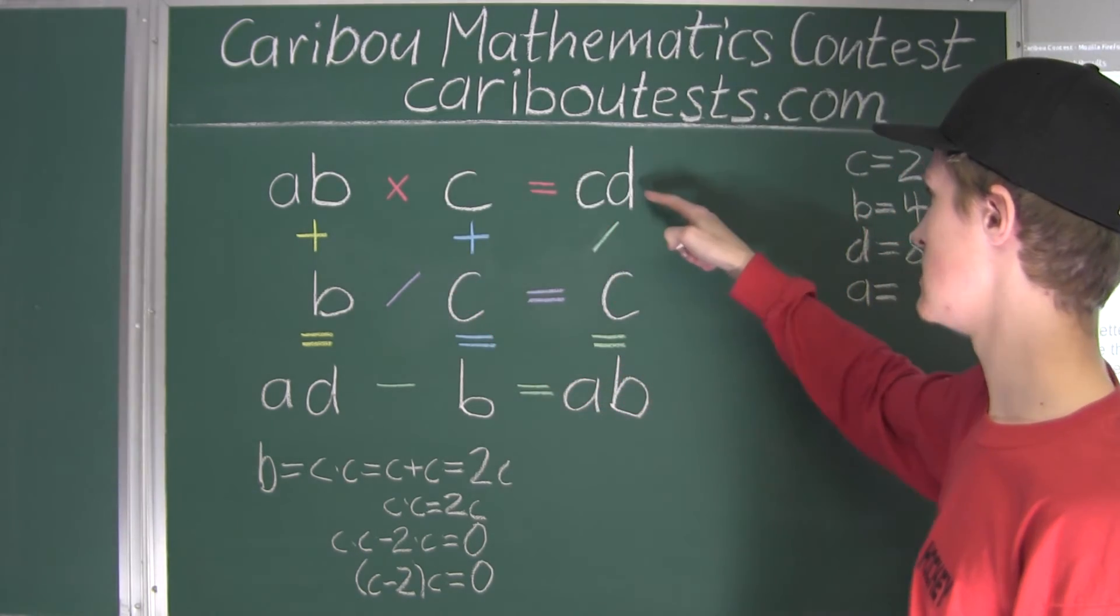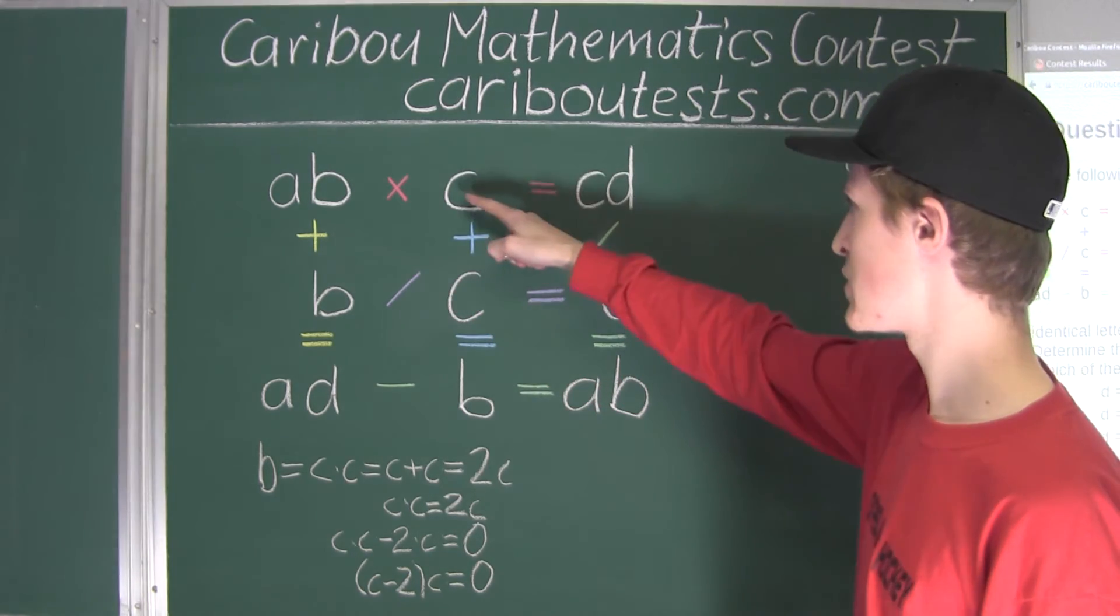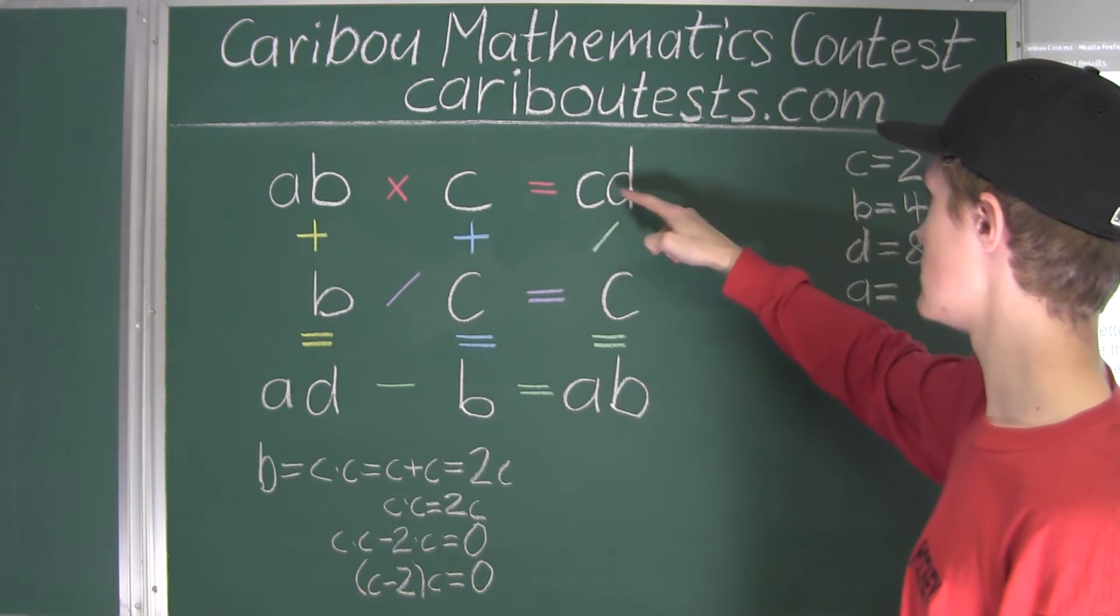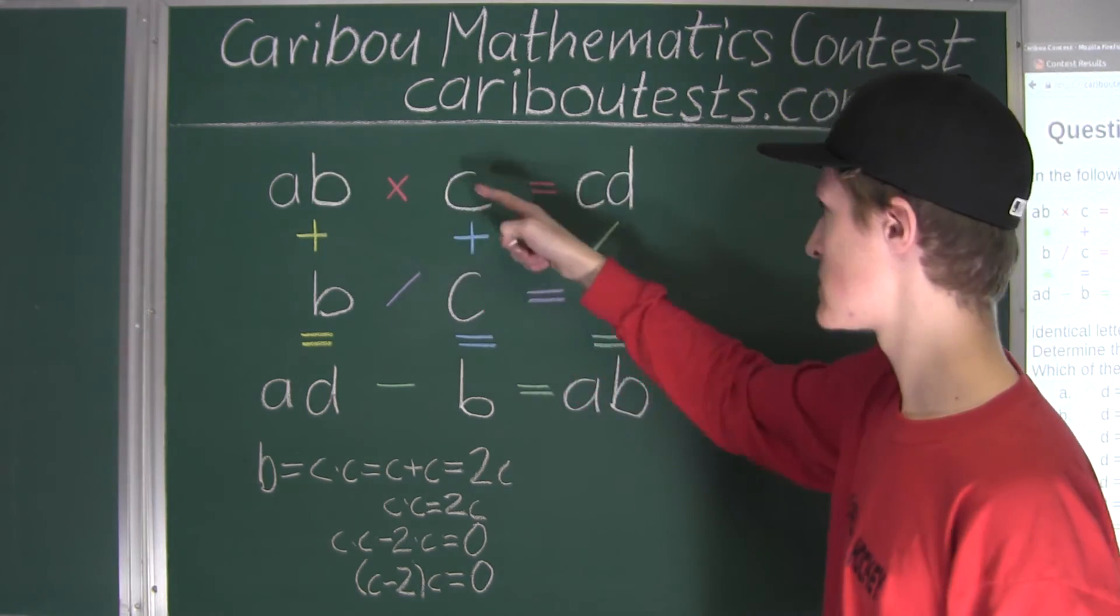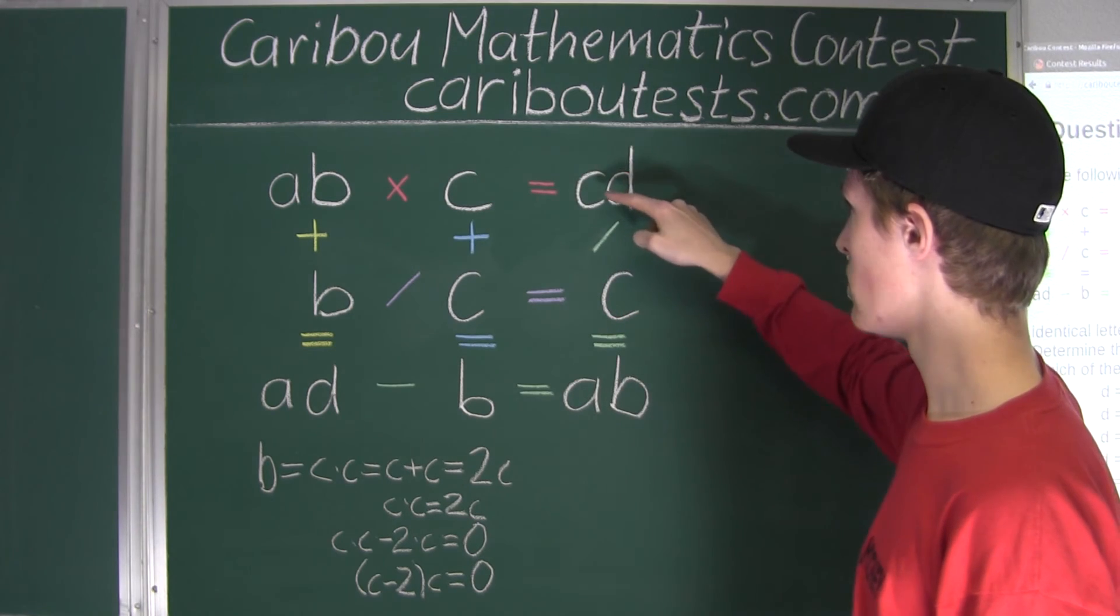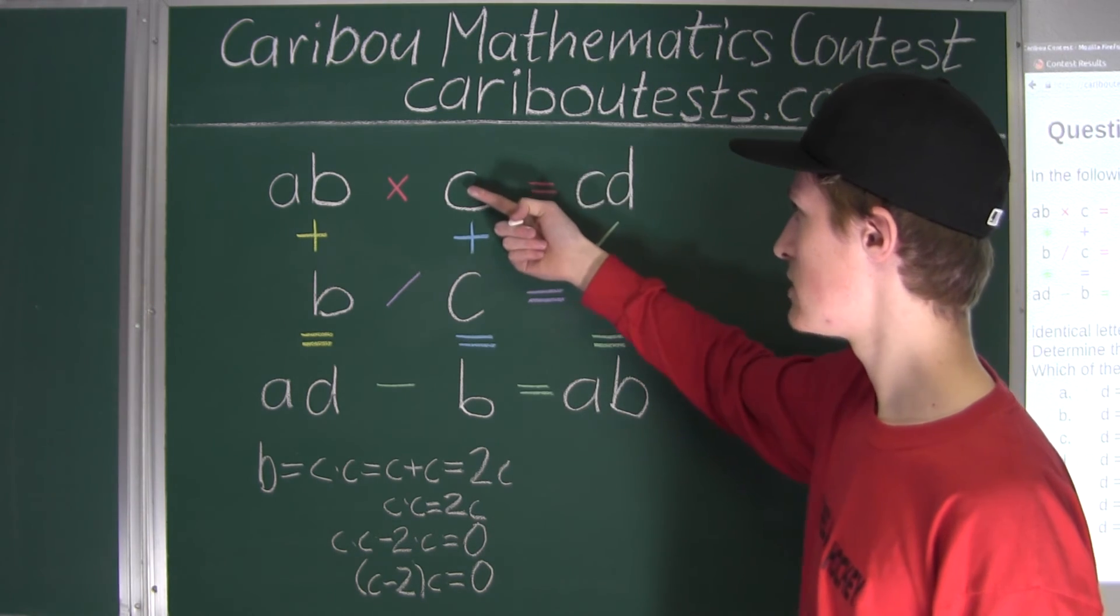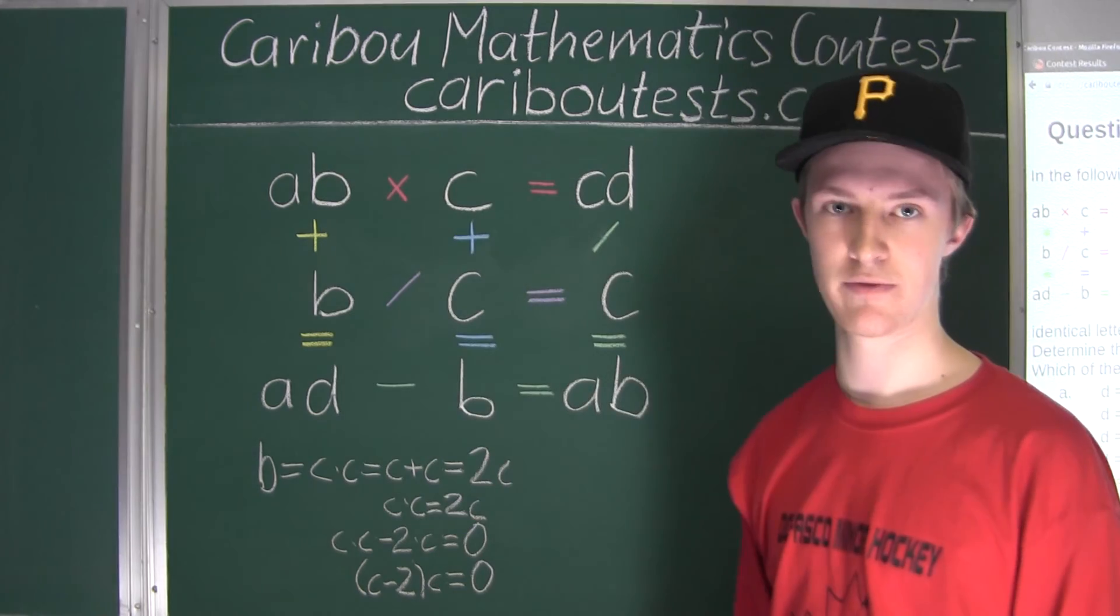AB times C is equal to CD. Well, we know that C is 2 equals 2, and then 2, and D is 8. So, 28. So, a number times 2 is equal to 28. Well, 28 divided by 2 is equal to 14. So, that number would be 14.